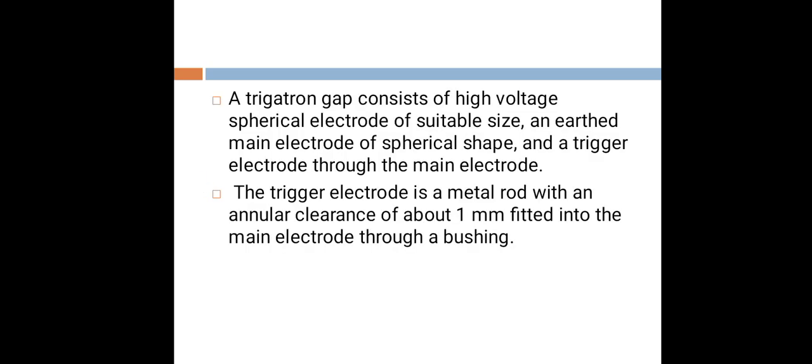This is the structure of the impulse generator. A trigatron gap consists of a high voltage spherical electrode of suitable size and an earthed main electrode of spherical shape, and a trigger electrode through the main electrode. The trigger electrode is a metal rod with an annular clearance of about 1 mm fitted into the main electrode through a bushing.